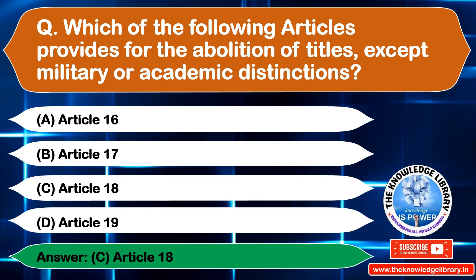The next question is: which fundamental right aims at eliminating social evils? Option A: Right to Equality, Option B: Right Against Exploitation, Option C: Right to Freedom, Option D: Cultural and Educational Rights. The correct answer is Option B: Right Against Exploitation.